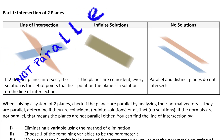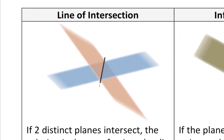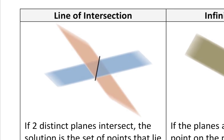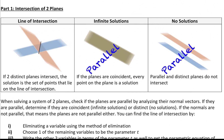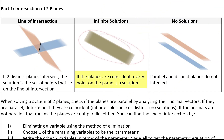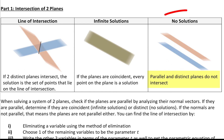If the planes are not parallel to each other, they are going to intersect in a line — we say they have a line of intersection. If the two planes are parallel to each other, they are either parallel and coincident, meaning the planes lay right on top of each other and are in fact the same plane with an infinite number of solutions, or the planes are parallel and distinct, meaning they are apart from each other, never intersect, and there would be no solutions.